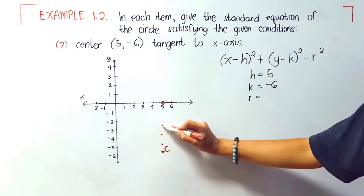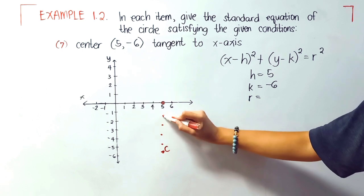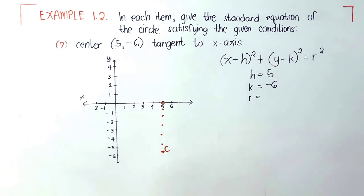So we'll have 1, 2, 3, 4, 5, and then 6. Therefore, our radius here is 6.